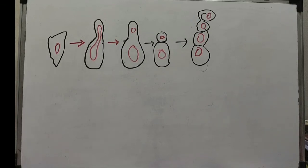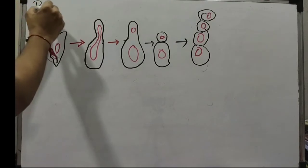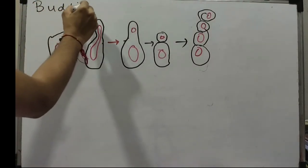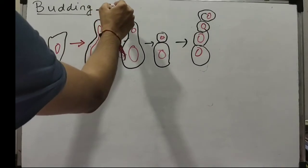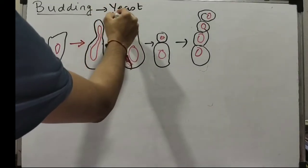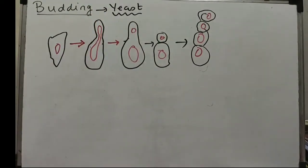So let's talk about budding, a very simple process. We're talking specifically about unicellular organisms, so we'll take an example of yeast. It's very simple, this is actually a basic thing.